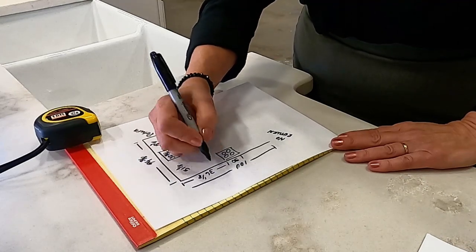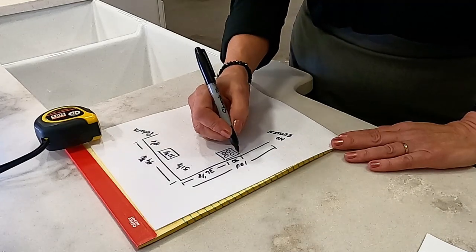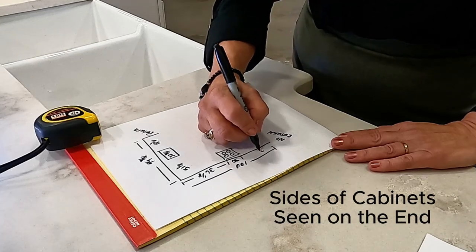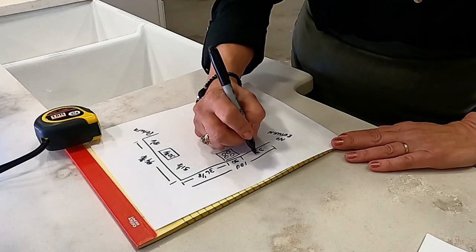And then from the stove to the end of the wall. That's an open end, so everybody will see the edges of your cabinets. Therefore, there won't be any fillers there.